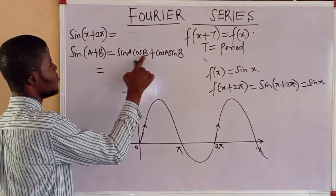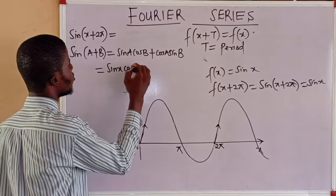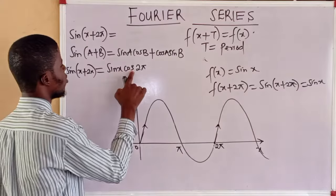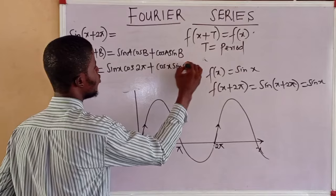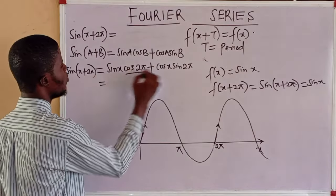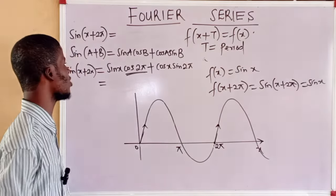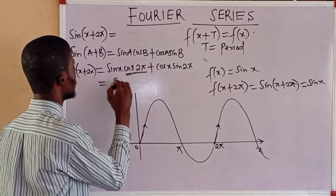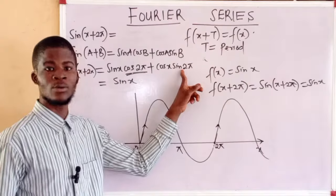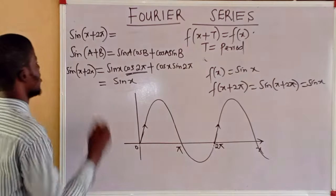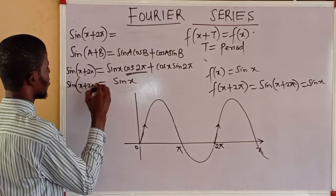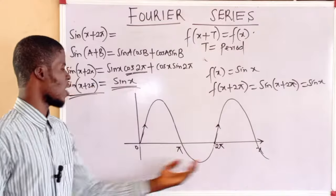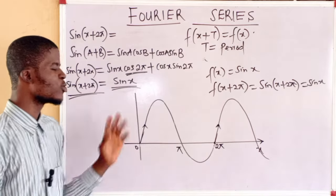Here a = x and b = 2π, so: sin(x + 2π) = sin(x)cos(2π) + cos(x)sin(2π). Now cos(2π) = cos(360°) = 1, so 1 × sin(x) = sin(x). And sin(2π) = 0, so 0 × cos(x) = 0. Therefore sin(x + 2π) = sin(x), which confirms that 2π is the period of the function.